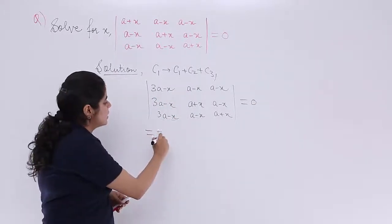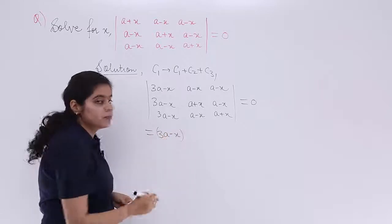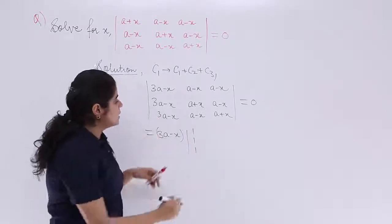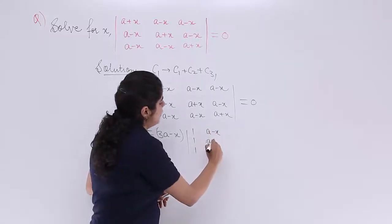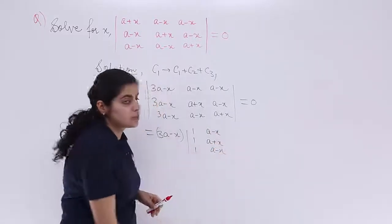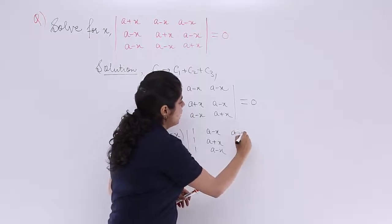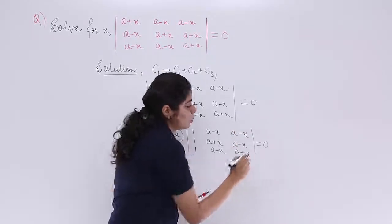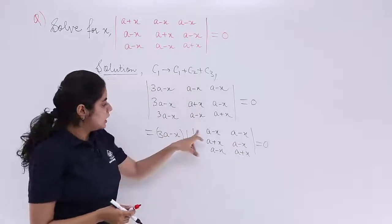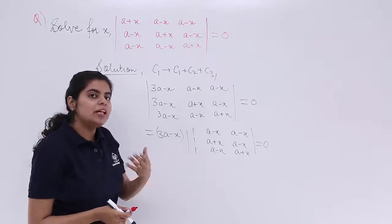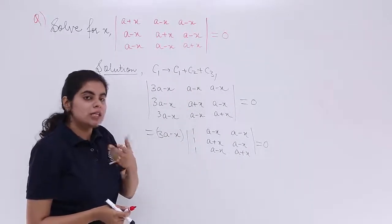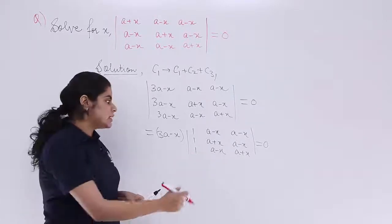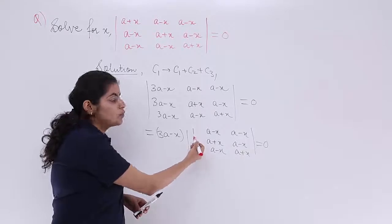After taking out (3a − x) as common, what remains is: row 1 becomes 1, (a − x), (a − x); row 2 becomes 1, (a + x), (a − x); row 3 becomes 1, (a − x), (a + x). This is all equal to 0. Notice there are three 1s in the first column. Evaluation of a determinant becomes easier with maximum zeros, so let's subtract row 1 from row 2 and row 3.